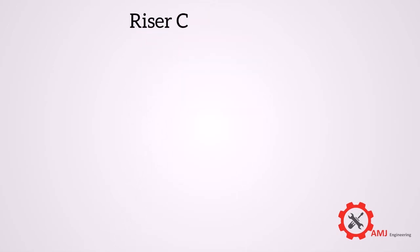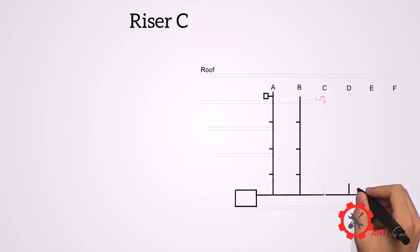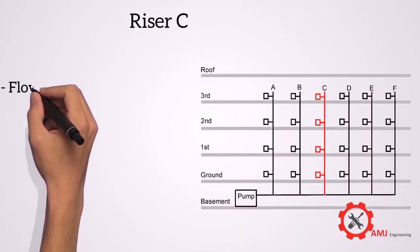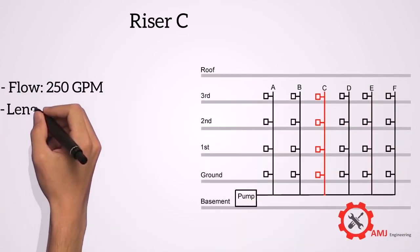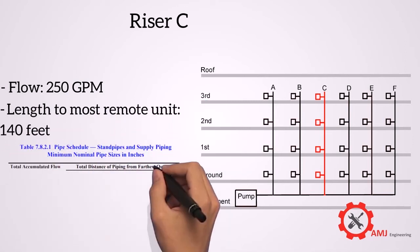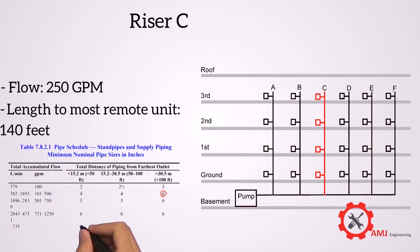For riser C, the flow is 250 GPM, the length to most remote outlet on riser C is 140 feet. So from the table the required pipe size is 6 inches.